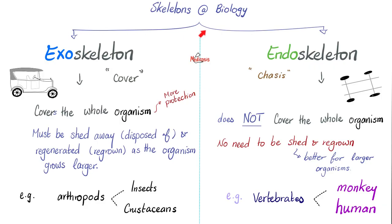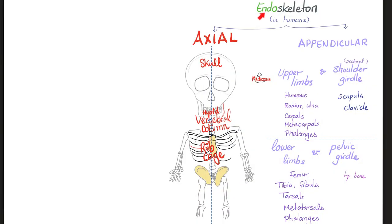Do humans have an exoskeleton or an endoskeleton? An exoskeleton is something that covers your body from the outside, and as you grow as an organism, you need to shed away this exoskeleton. Some insects and crustaceans are like that — we call them arthropods. 'Arthro' means joint or articulation, 'pods' is from the Greek meaning feet, as in podiatrist. Humans do not have exoskeletons. What humans have is an endoskeleton — a chassis within your body that provides internal support without needing to be shed.